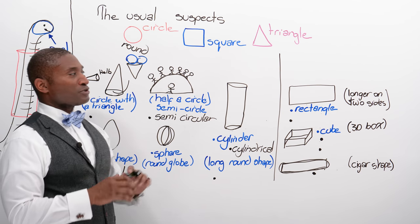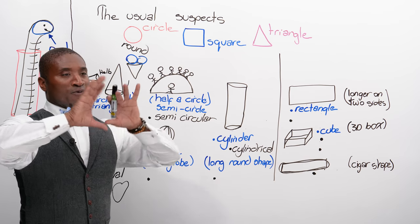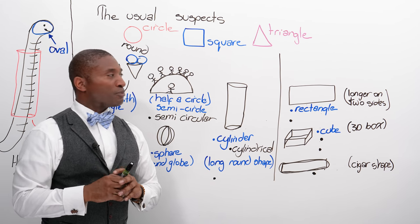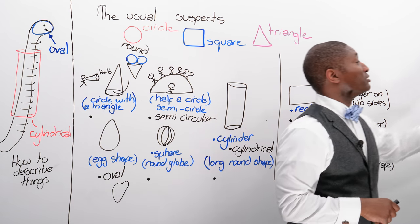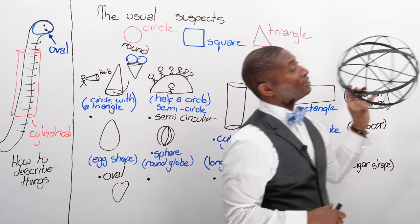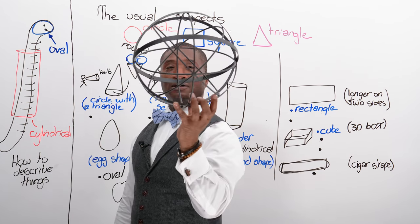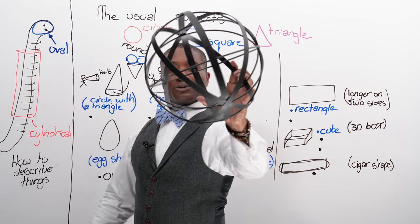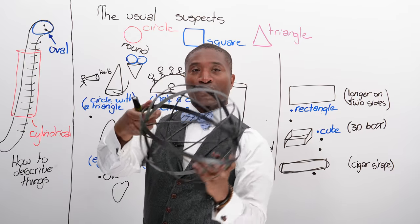Sphere. Well, a sphere is a round thing — like a full circle that's three-dimensional. You're probably thinking, besides the planet Earth, where is James going to get a sphere for me to see? A sphere — three-dimensional, there's a circle and a circle and the circle goes in three dimensions.